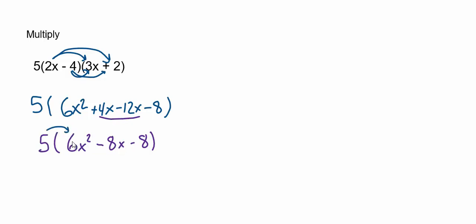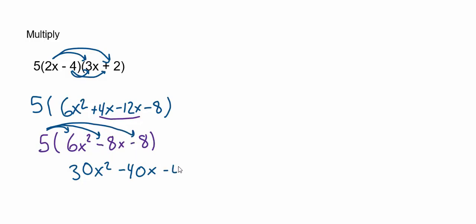Now it's time to multiply that five through these three terms. Five times 6x squared is 30x squared. Five times negative 8x would be negative 40x. And finally, you can think of this as 5 being multiplied by negative 8, and that's negative 40, but I will write subtract 40. Because none of my terms are like terms, I cannot simplify any further. This term has an x squared, this term has an x to the first, and this term has no x at all, so those are not like terms, so I'm done with the problem.